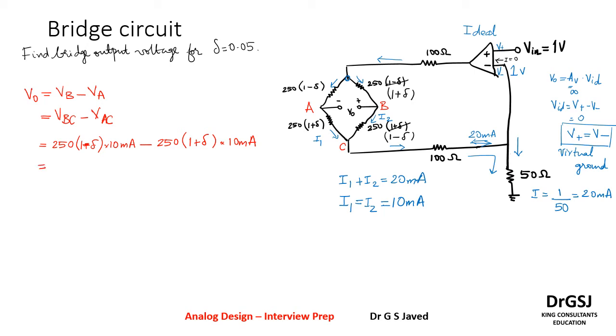So now if you take it up here, if you multiply, so 250 into 10 milliampere if you take it out, 2500 times (1 minus delta) minus (1 plus delta). So this is equal to 2500 times minus 2 delta.